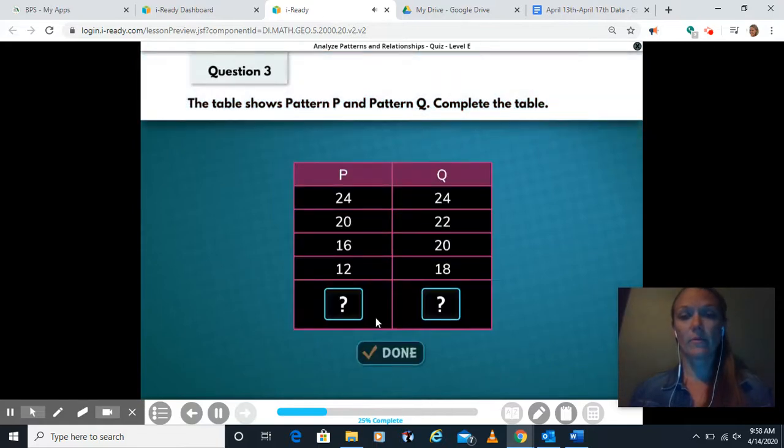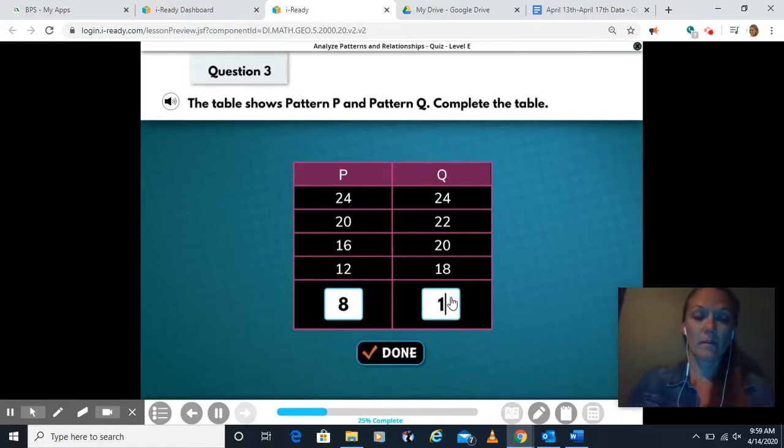All right, so we're going to complete the table to see what's going to come in these last boxes here. So what's happening each time? I went from twenty-four to twenty, from twenty to sixteen, from sixteen to twelve. What is happening between each of these? The numbers are going down, and they're going down every time by four. So they're subtracting four each time. So then if I did twelve minus four, I will get eight. We're going to do the same thing in column Q. Twenty-four to twenty-two, looks like that went down by two. Twenty-two to twenty, that went down by two. Twenty to eighteen, minus two. So then eighteen minus two is sixteen.